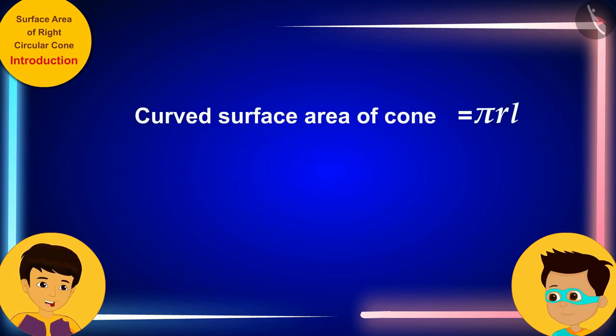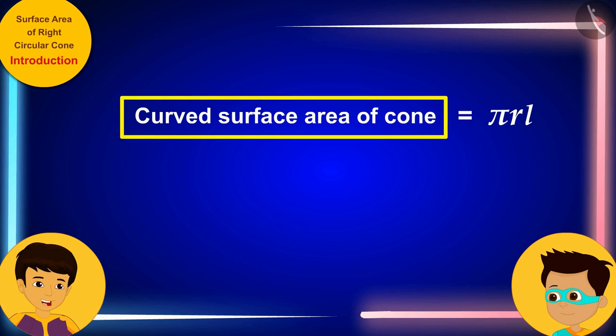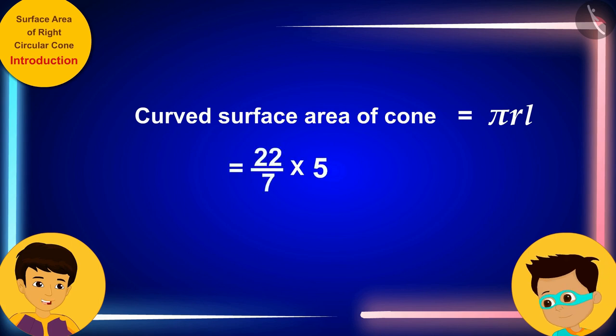Let me quickly solve this by writing r and l in the formula for the curved surface area of the cone by writing the radius of the base of my cap as 5 cm and the slant height of the cap as 14 cm respectively.